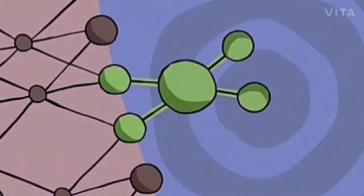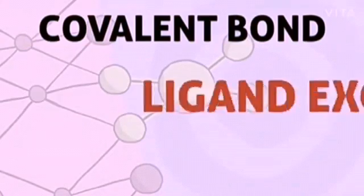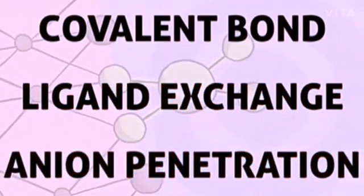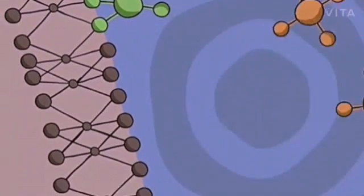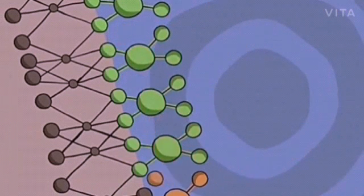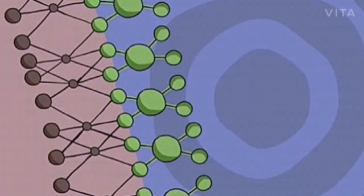This is what is termed as physisorption. But in chemisorption, the interaction leads to the formation of covalent bonds, ligand exchange, or anion penetration due to comparatively stronger bonds formed between the first layer of adsorbate molecules and the surface of the adsorbent, as compared to that of physisorption. Hence, this process is termed chemisorption.